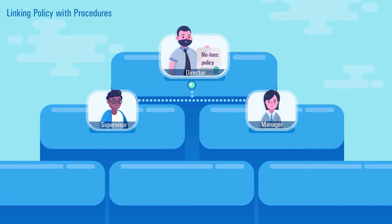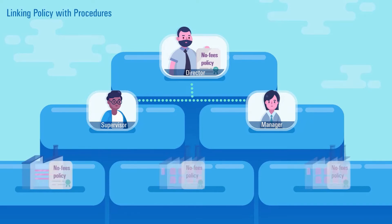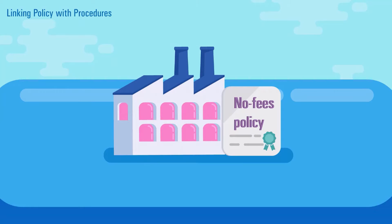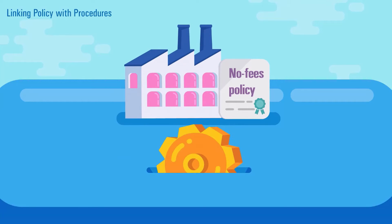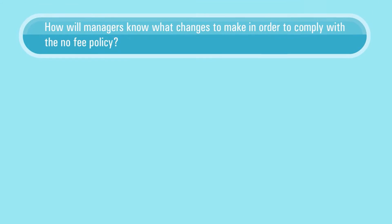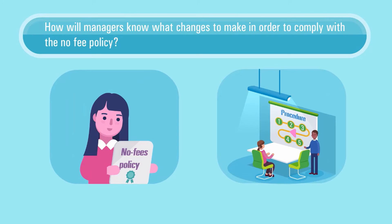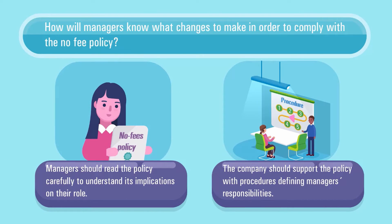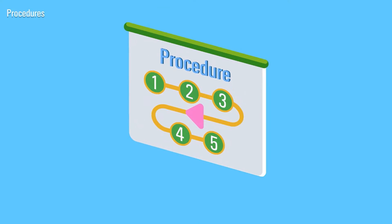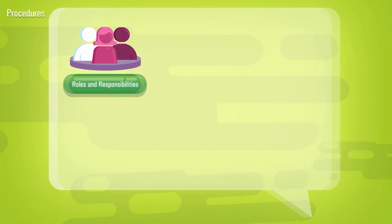Policies should be endorsed from the top. Communication with suppliers has a lot more weight if it comes from senior executives. The policy establishes the rule of no recruitment fees, but putting it into practice will require changes in the way managers and supervisors carry out their roles. The company must define the main operational practices used to implement the policy. These should include defined roles and responsibilities, ensuring that implementation is not confined to one person.